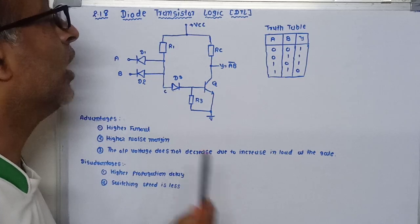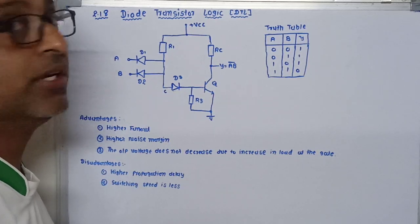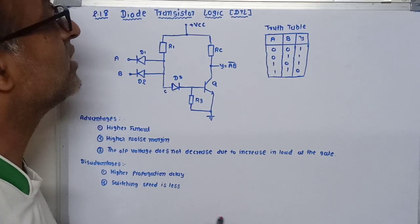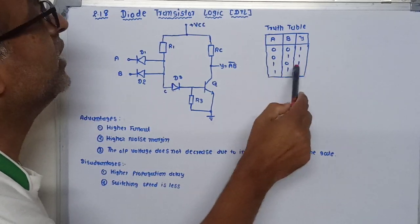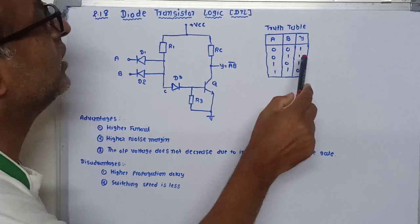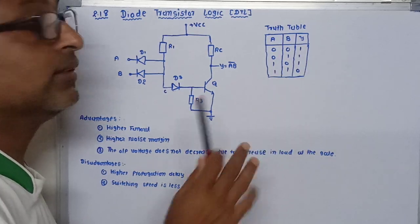As a result, the output of this collector terminal will be zero, or you can say at zero logic. So now this circuit behaves as a NAND gate.